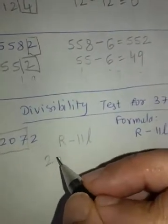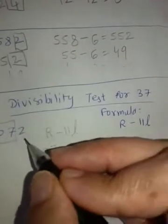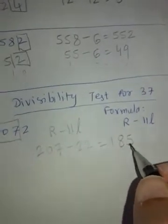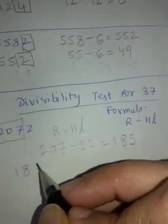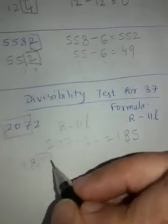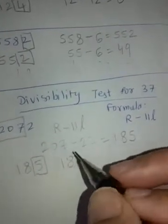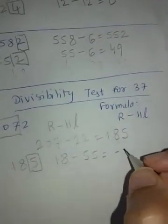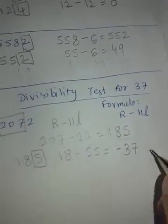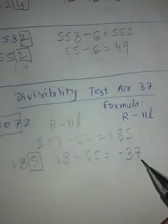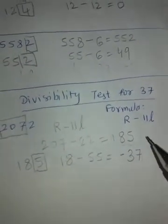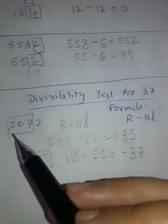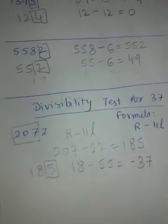Last digit is 2, remaining number is 207, 11L is 11 times 2, 22, which is 185. I am copying it here, 185. 18 is the remaining number, 11 times 5 is 55, so this is minus 37. See we didn't get 0 here, but we went below 0 and we got minus 37. Now 37 is definitely a factor of minus 37, that means this number is divisible by 37.